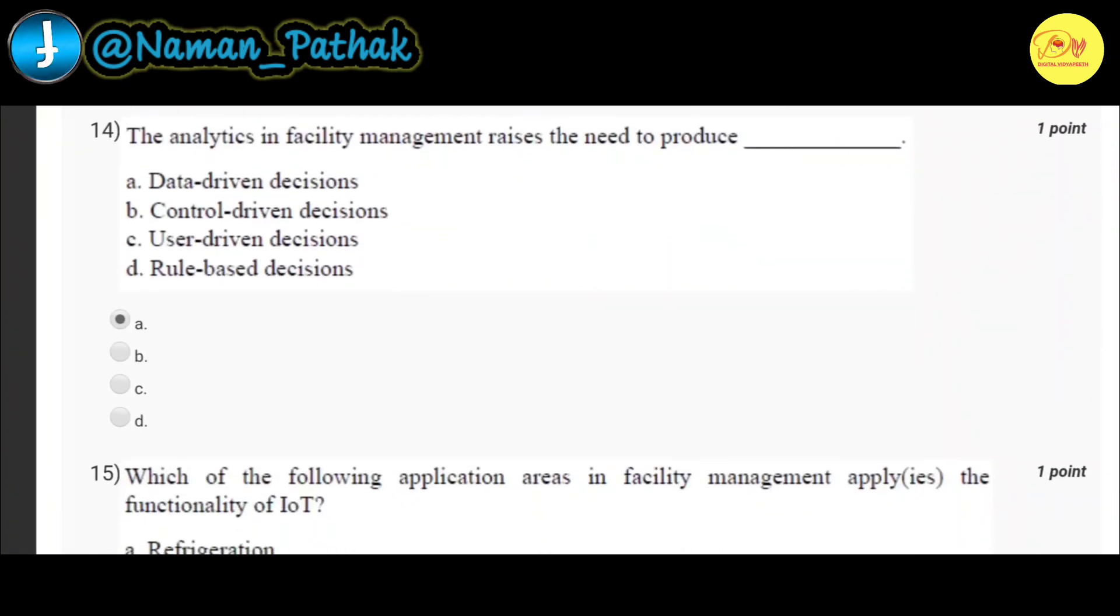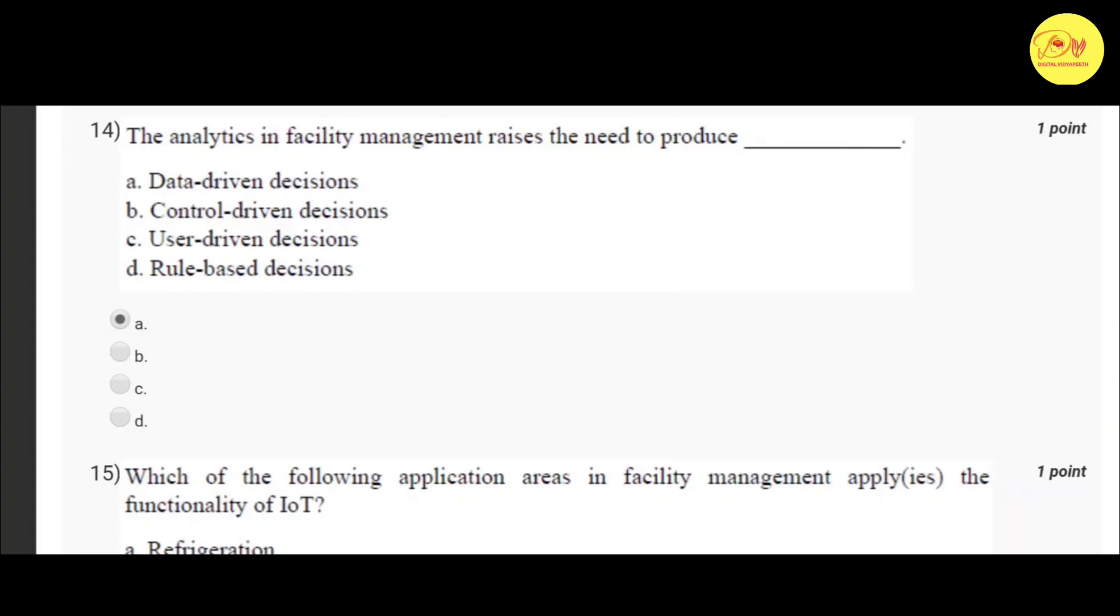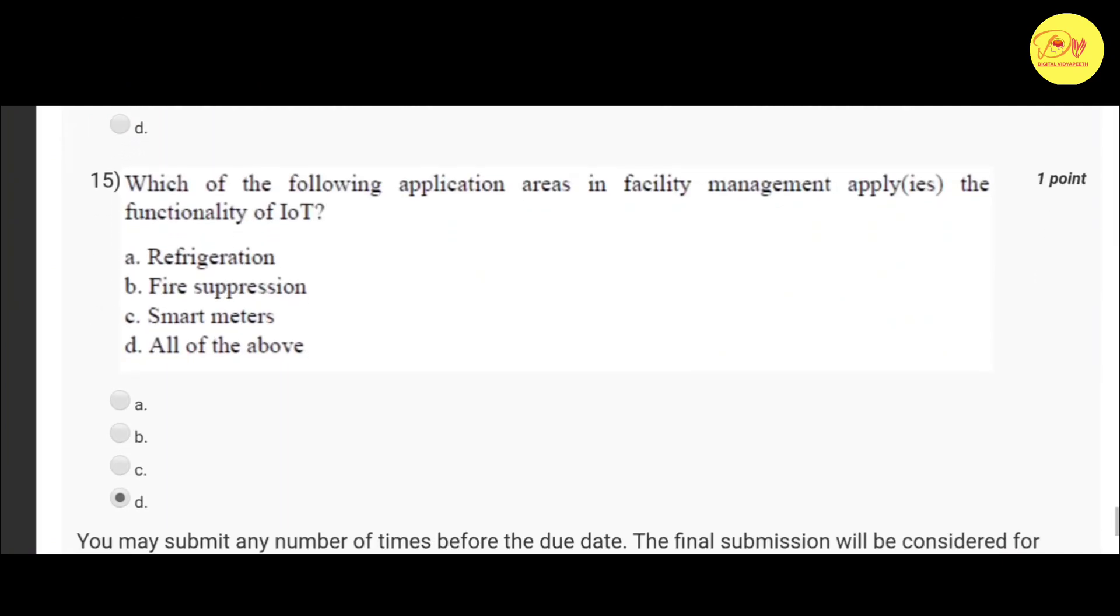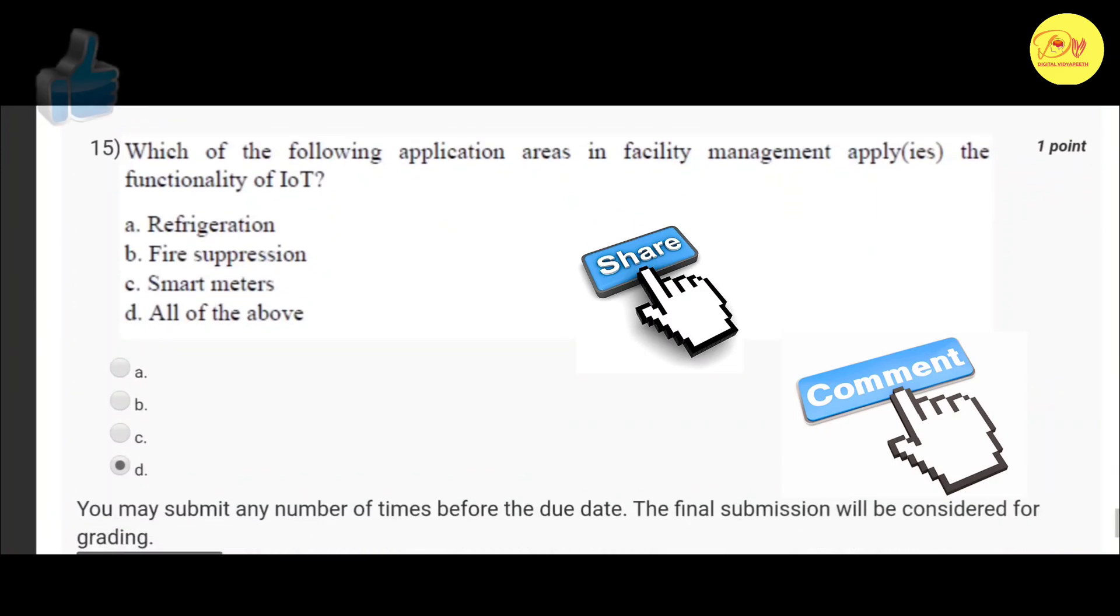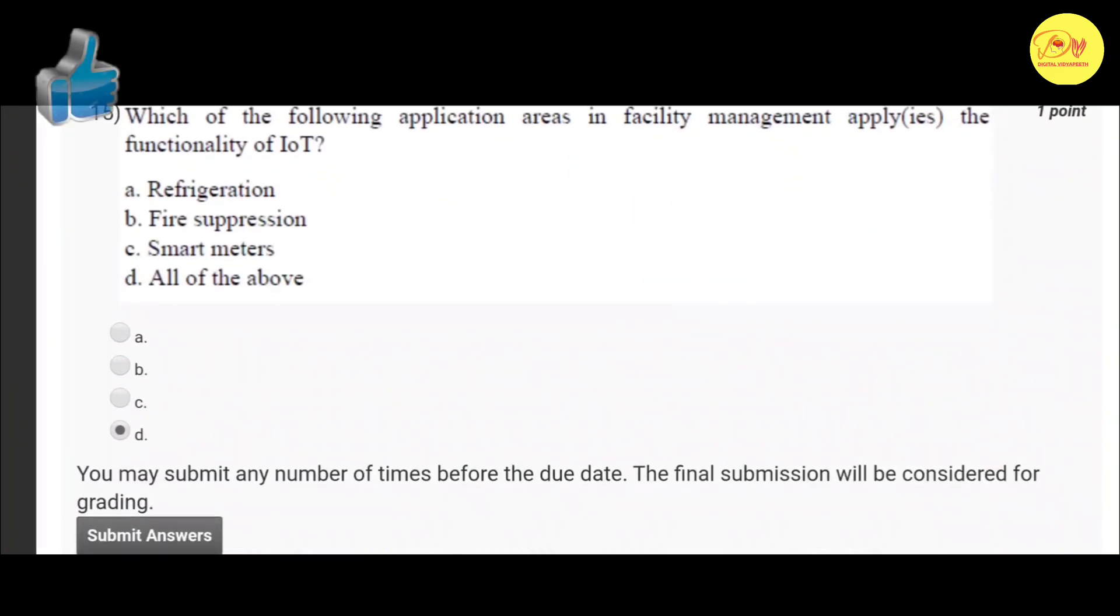Our 14th question is: The analytics in facility management raises the need to produce? Correct option is A, data driven decisions. Our last question is: Which of the following applications areas in facility management apply or applies the functionality of IIoT? Correct option is D, all of the above - refrigerator, fire suppression, smart meters.